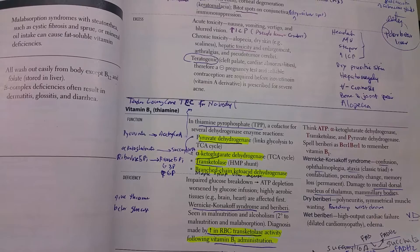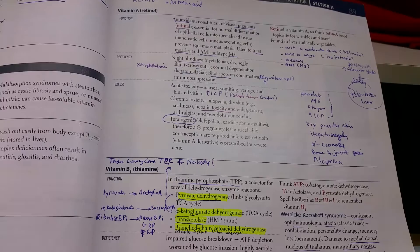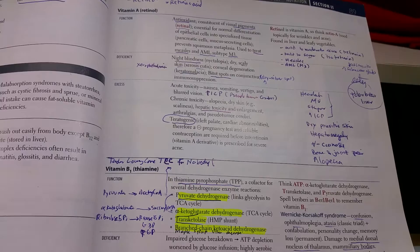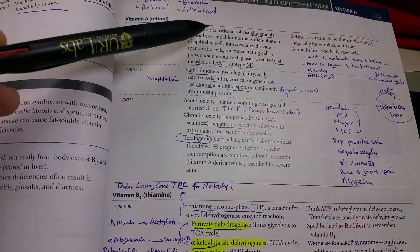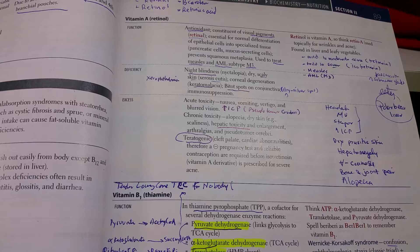Vitamin A exists in many forms: retinol, beta-carotene, and retinoic acid. It's very important as it acts as an antioxidant and is essential for the skin and epithelial cells to specialize.